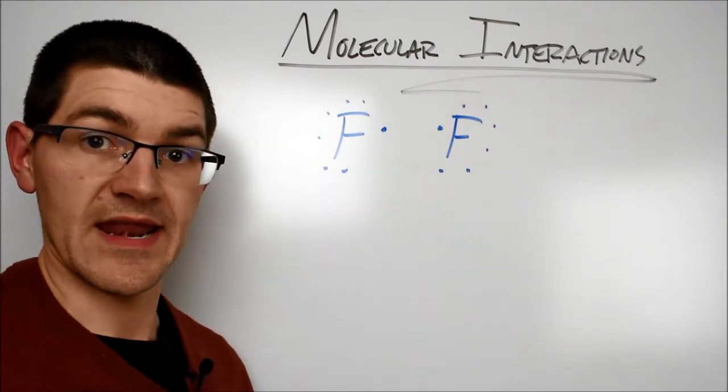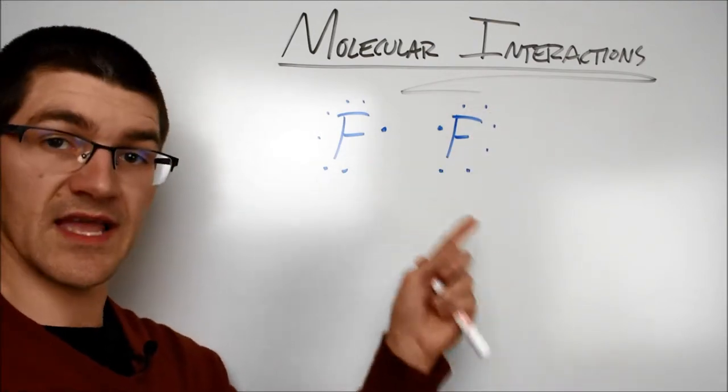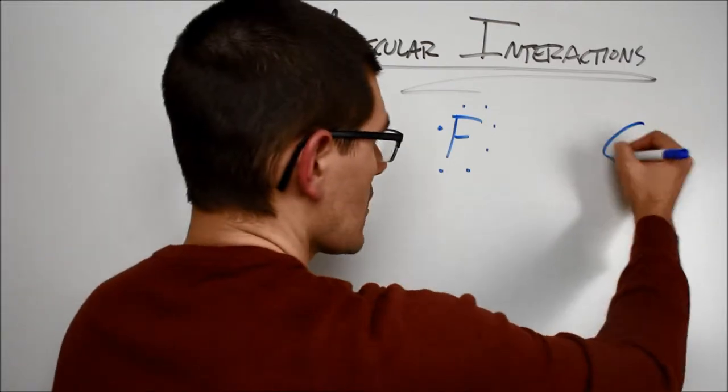They are going to share this electron. How do I know? Because you take the electronegativity difference. 4 minus 4 is, hey, wouldn't you know it, 0.